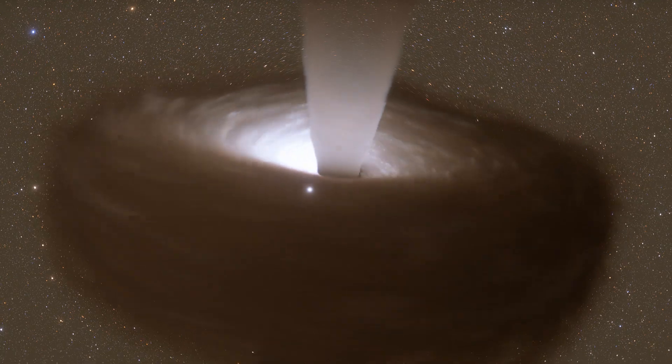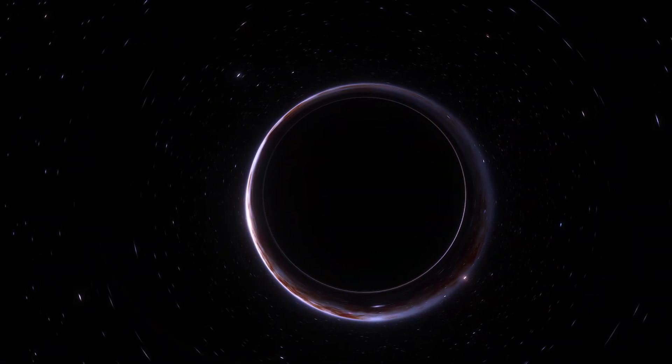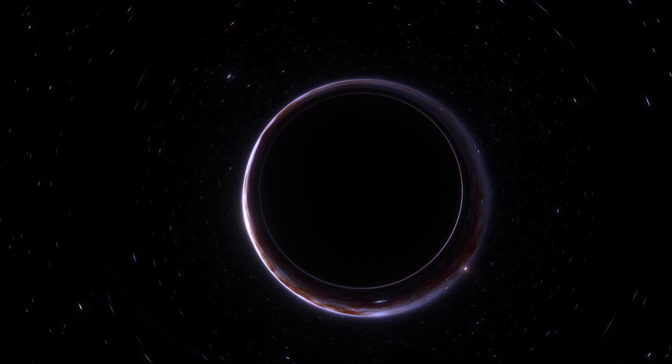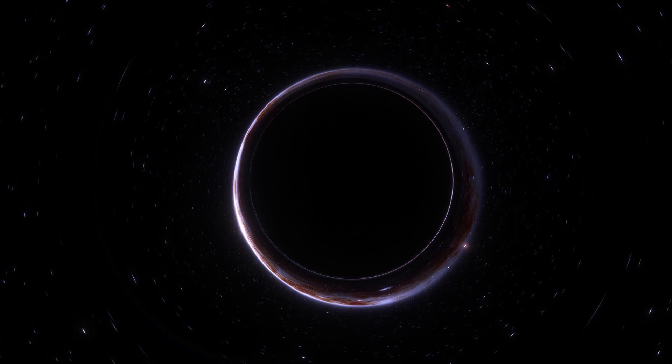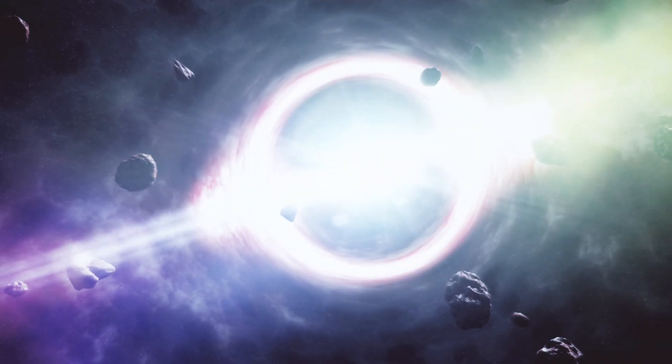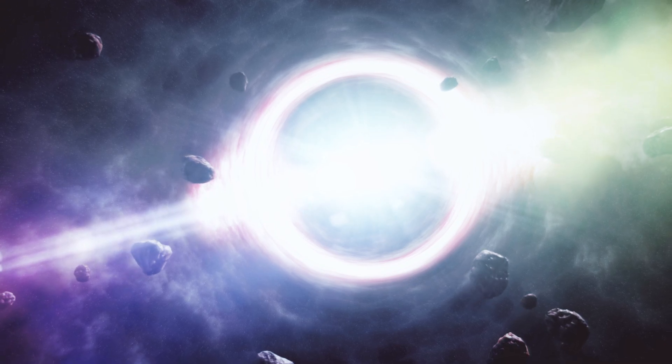Unlike supermassive black holes that usually sit at the centers of galaxies, the newfound object, about 10 times the mass of our sun, is a stellar mass black hole, a much more common type in the Milky Way. For comparison, supermassive black holes can be millions or billions of times as massive as the sun.